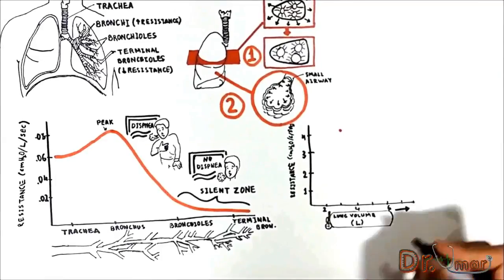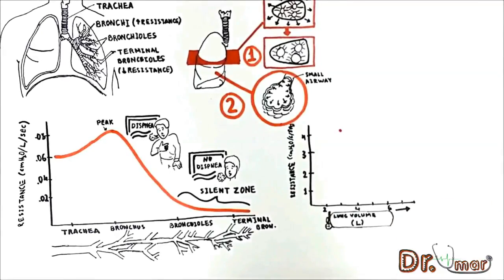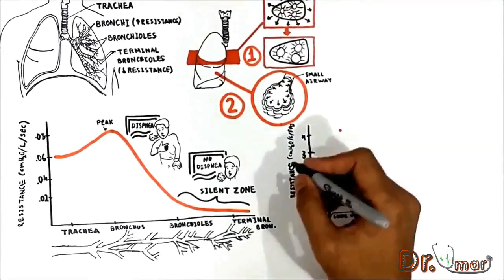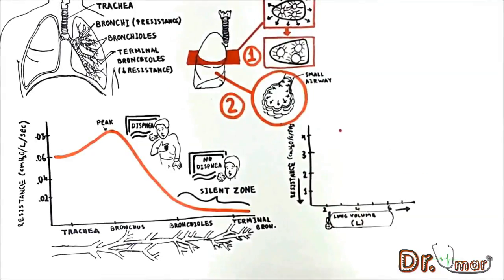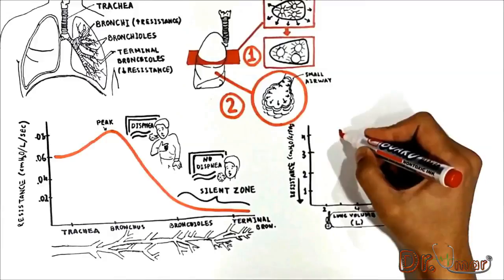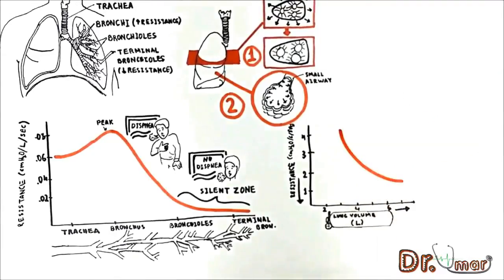As you expand the lung, it stretches the airways open more which tends to decrease the overall resistance of the lung system. So the normal curve will look something like this.